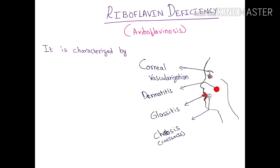Riboflavin deficiency is characterized by corneal vascularization, dermatitis, glossitis — that is inflammation of the tongue — and cheilosis, which refers to fissures or cracks at the angles of the mouth.